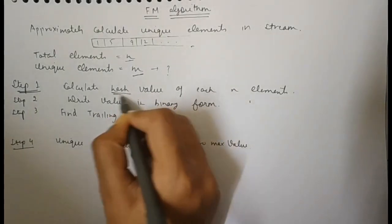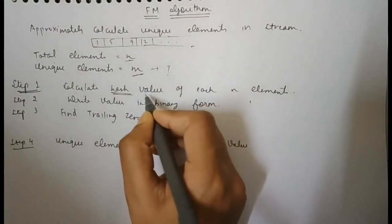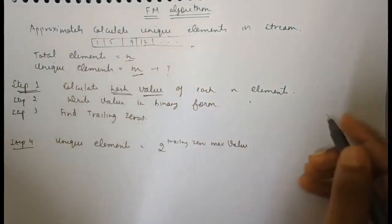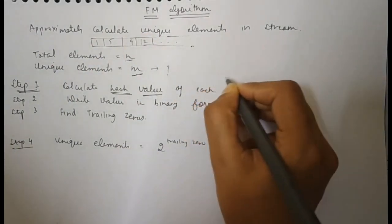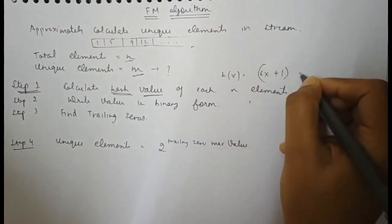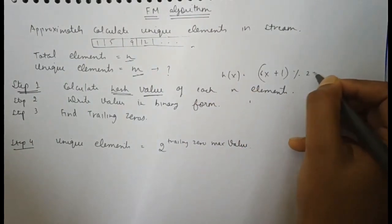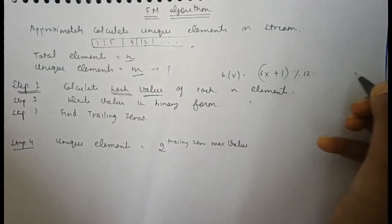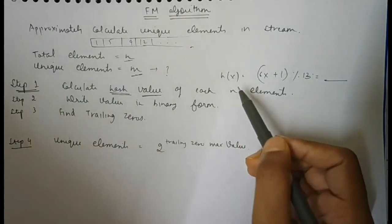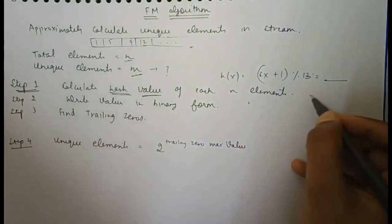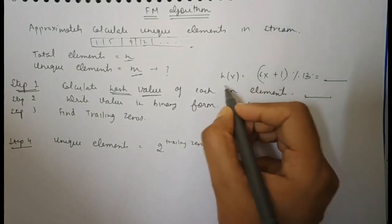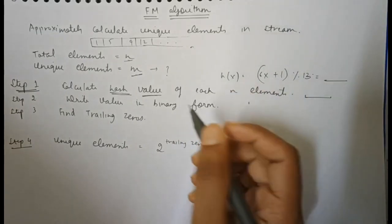First of all, we take a hash function and we pass the n elements through this hash function. For example, the hash function is 6x + 1 mod 2^12 or 2^13. We pass the values through this and we get again a stream of n numbers, that is the hash values.